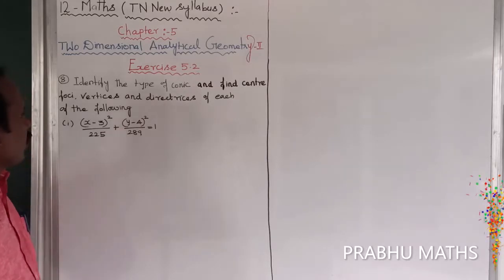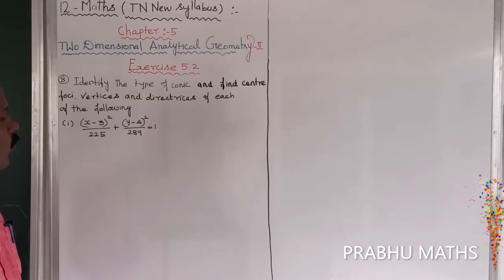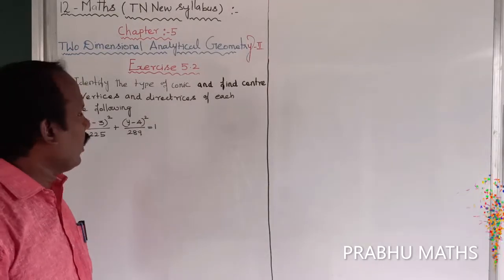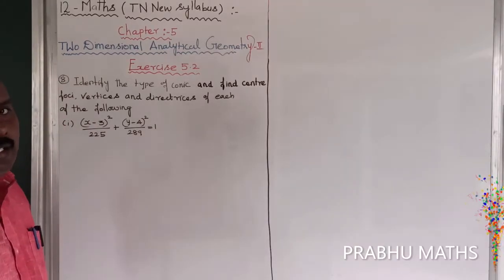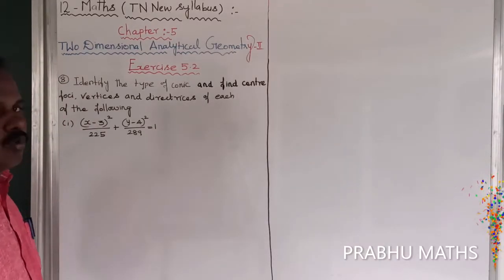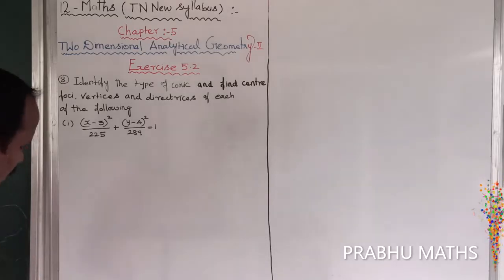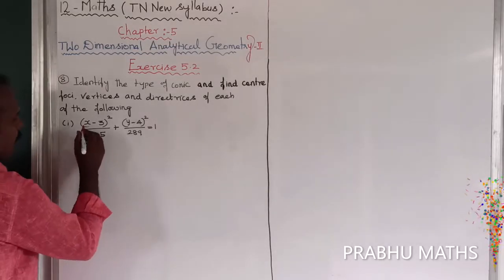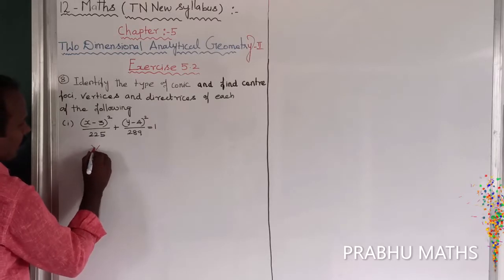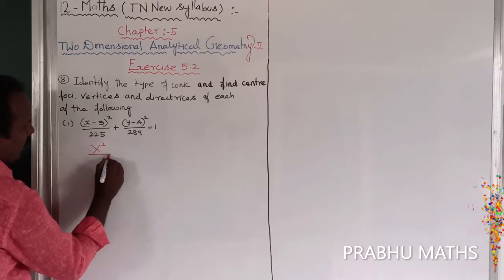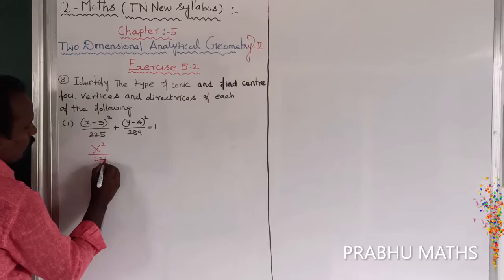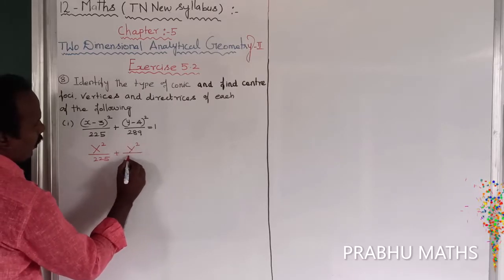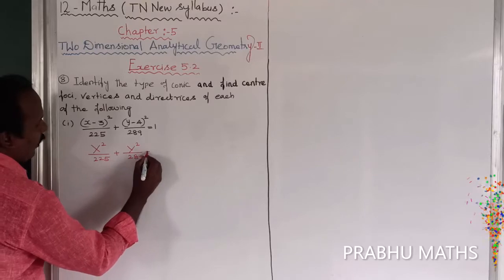The given conic section is called the ellipse, because the standard form is x²/a² + y²/b² = 1. Converting to standard form: x²/225 + y²/289 = 1.